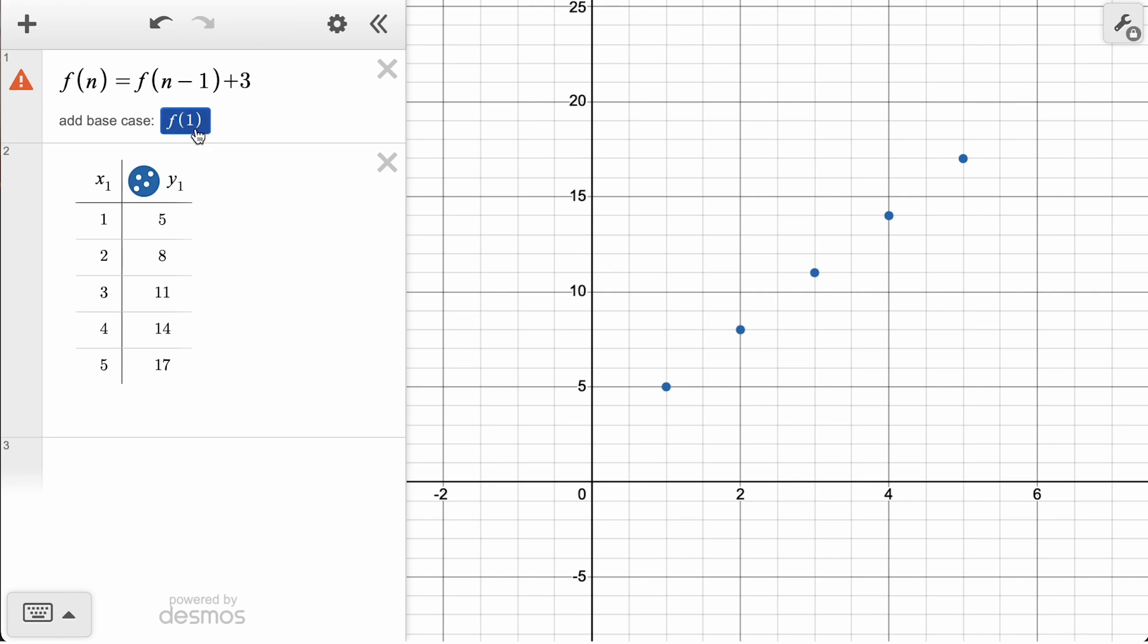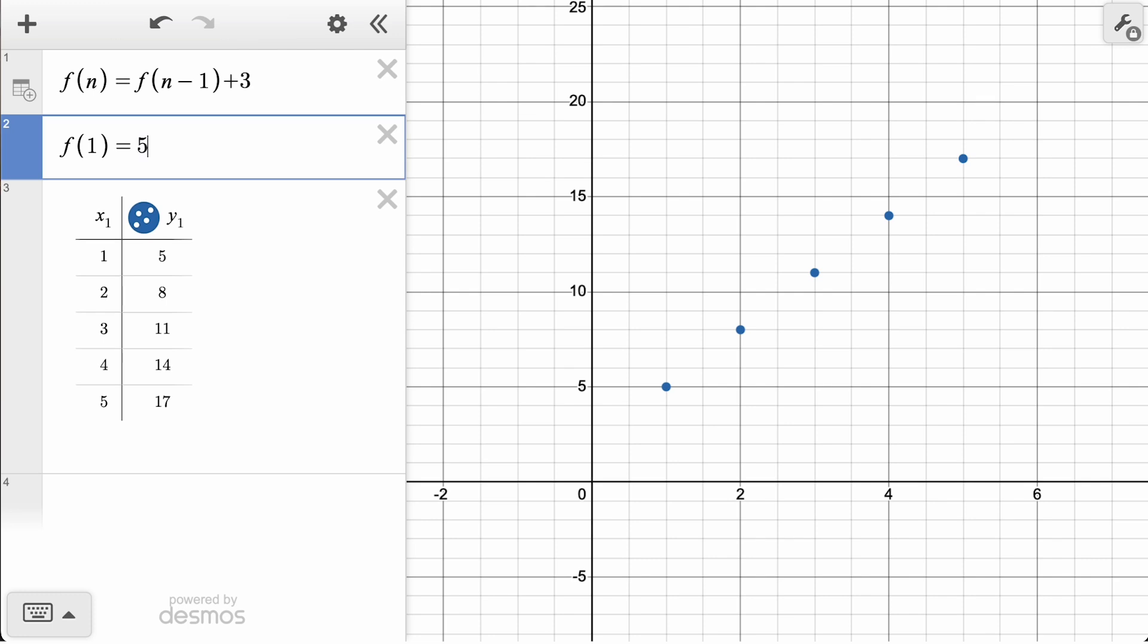By clicking to add a base case of f(1), the default starting value is 1. Looking at our table, we want the first term to be 5, so we will set f(1) equals 5. Now that our base case is set, our function describing the sequence in our table is fully defined.